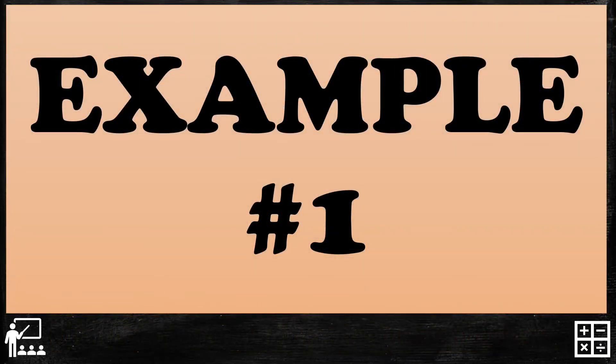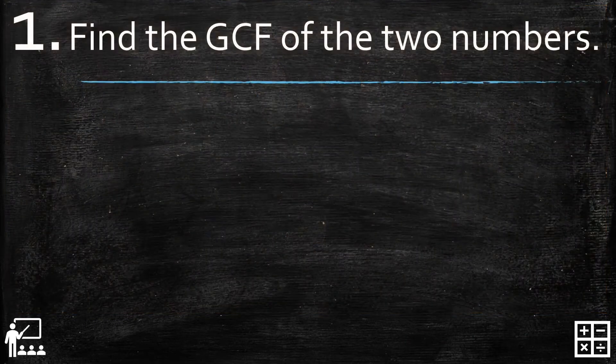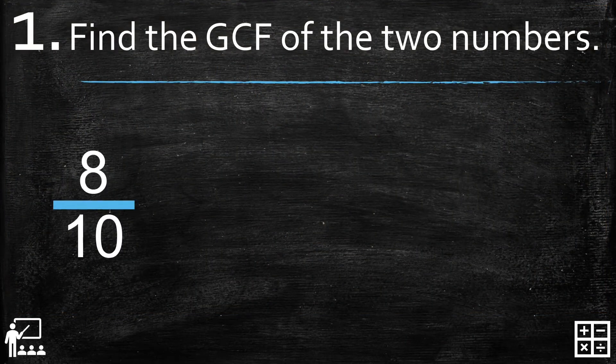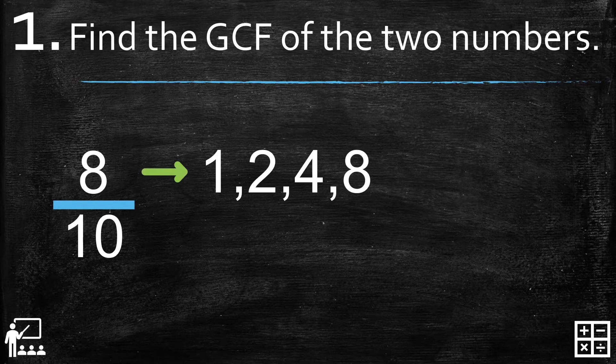Let's try an example: 8 over 10. The first step is to find the GCF of the two numbers. If you want to know how to find the GCF, click on the suggested video above. The factors of 8 are 1, 2, 4, and 8.